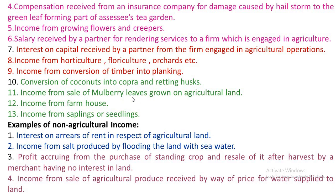Income from sale of mulberry leaves grown on agricultural land shall be treated as agricultural income. Income from a farmhouse, as already explained, is agricultural income. Income from saplings or seedlings: If an individual is engaged in greenhouse farming and doing activities relating to saplings or seedlings, whatever income derived from that activity shall be treated as agricultural income.